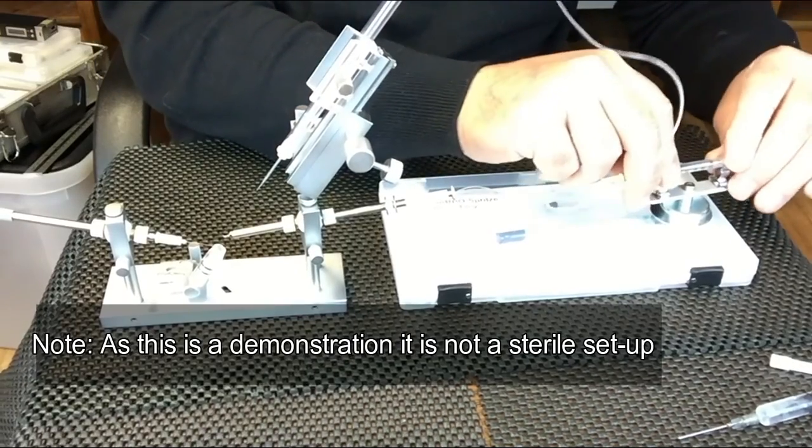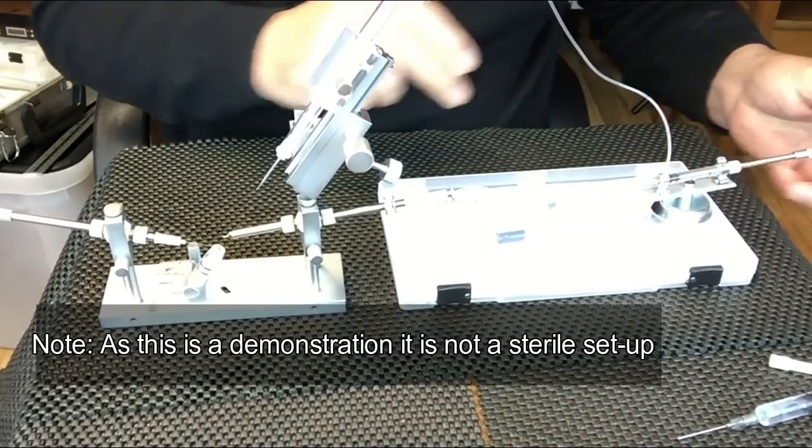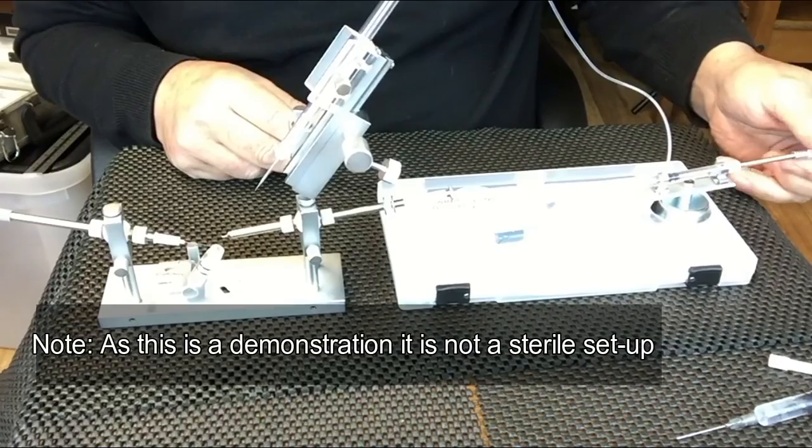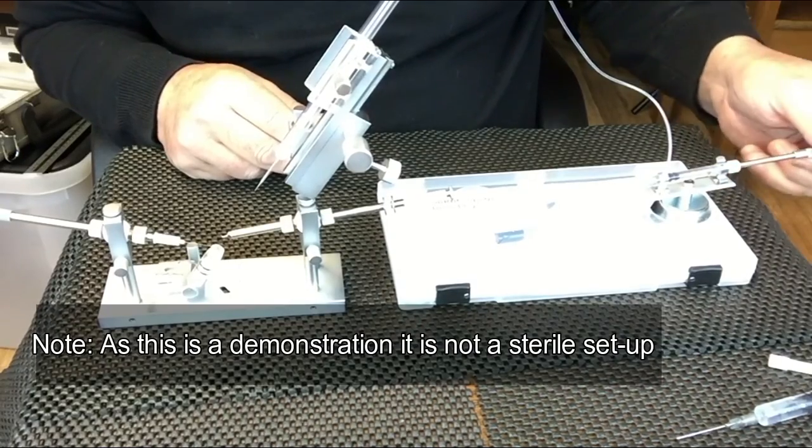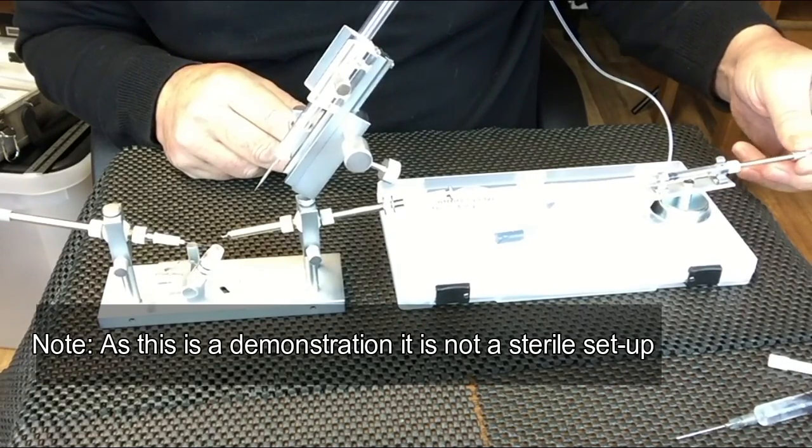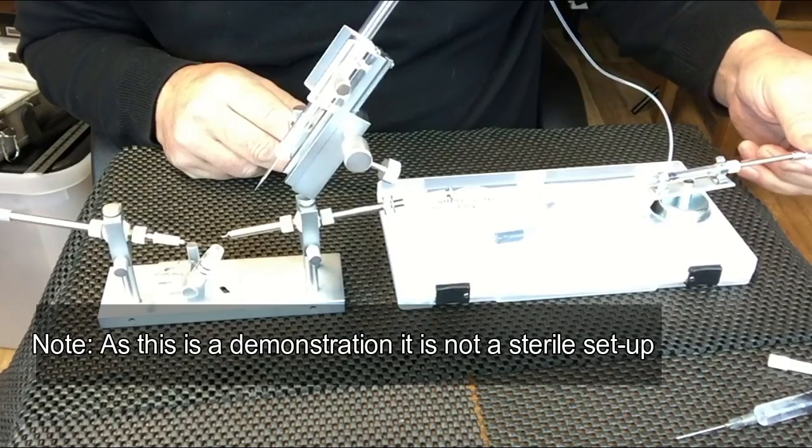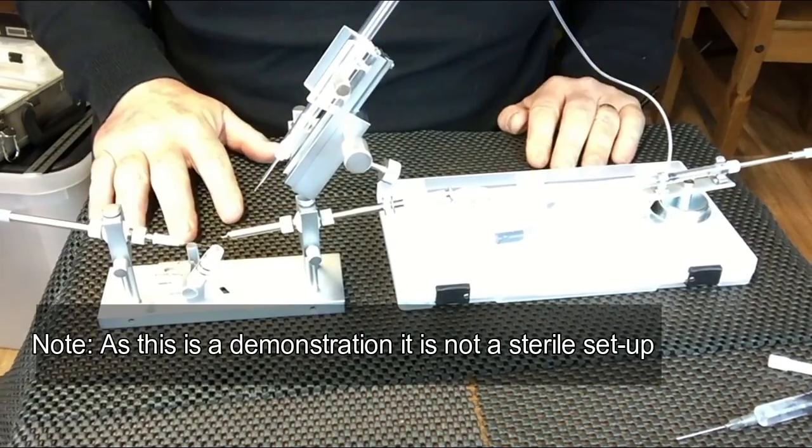Fit the syringe into the holder, drive the saline to the very tip, and you're ready to start collecting semen.